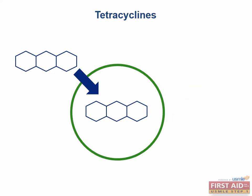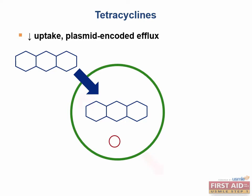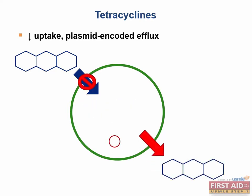The mechanism of resistance for tetracyclines is encoded by a plasmid. The plasmid enters the bacteria, it encodes an efflux channel that removes the tetracyclines from the cell. It also blocks the influx of tetracyclines by down-regulating the channel responsible for its influx.